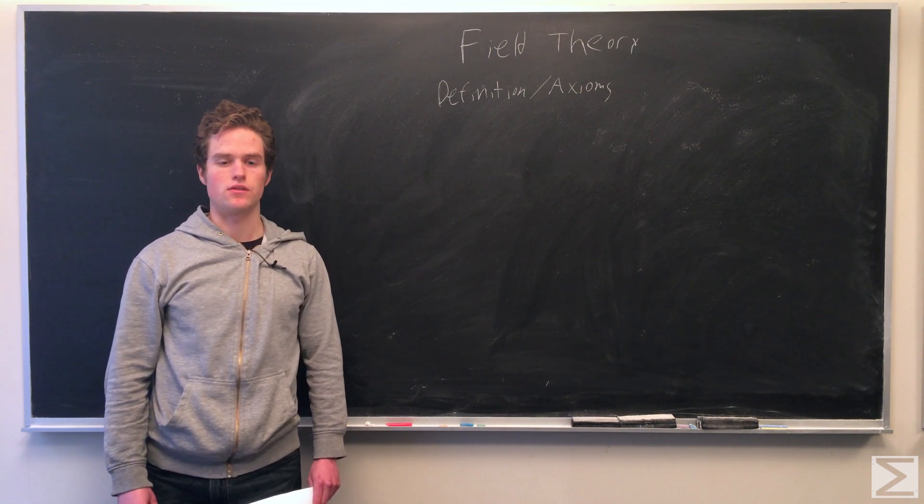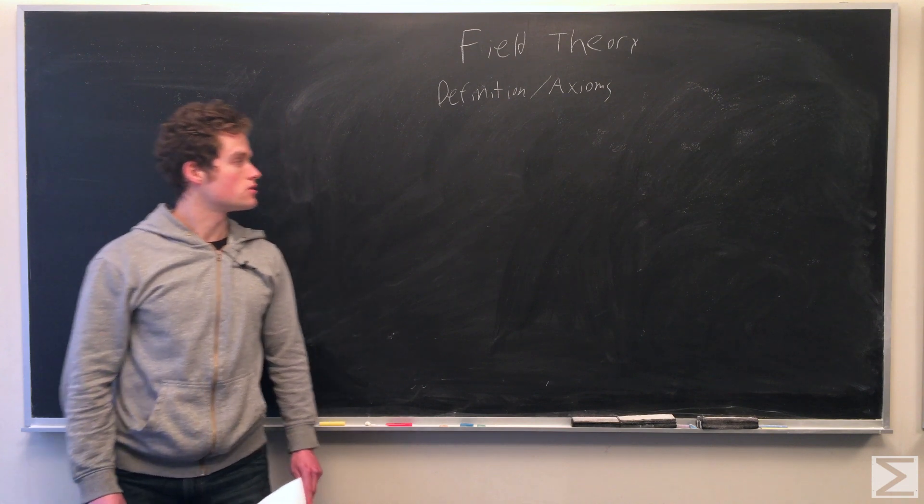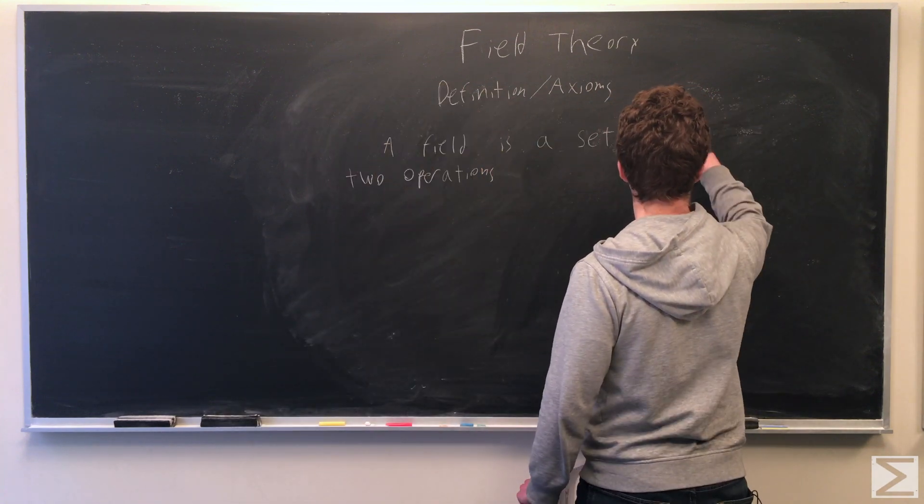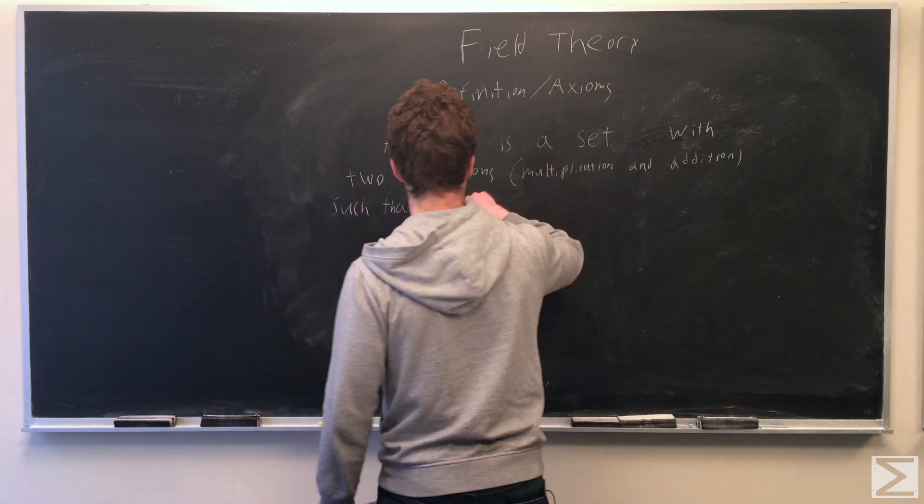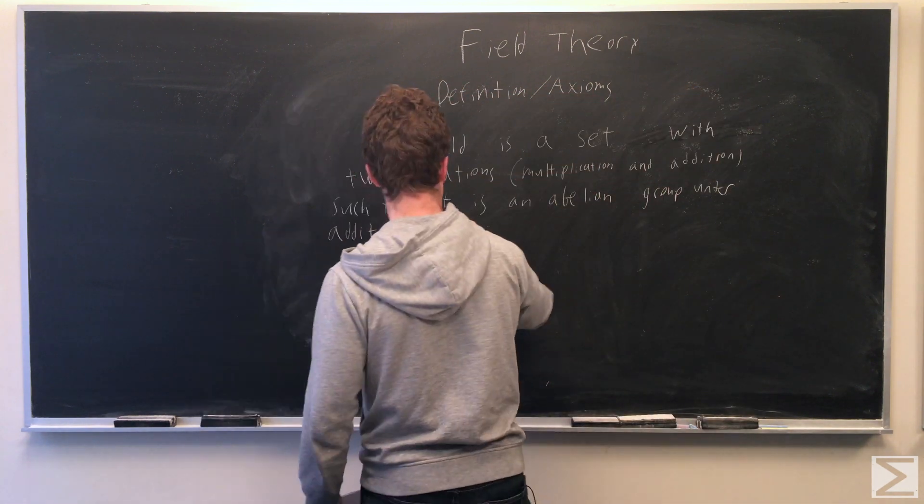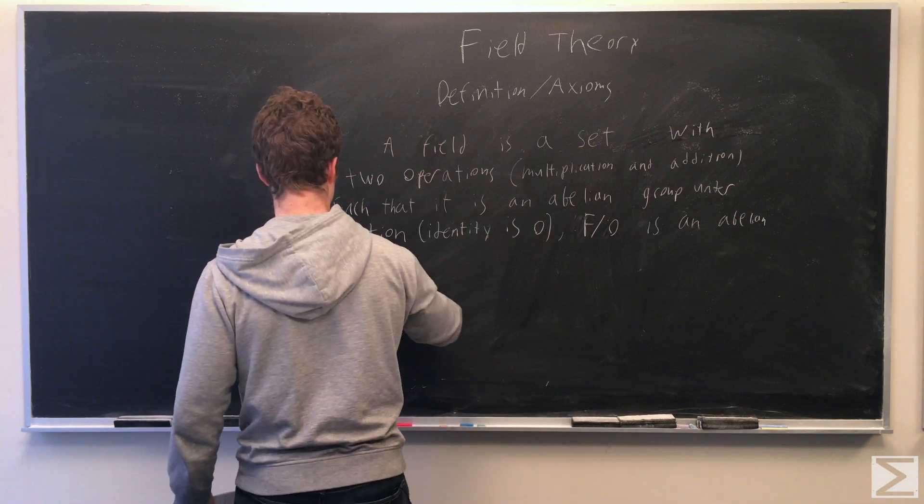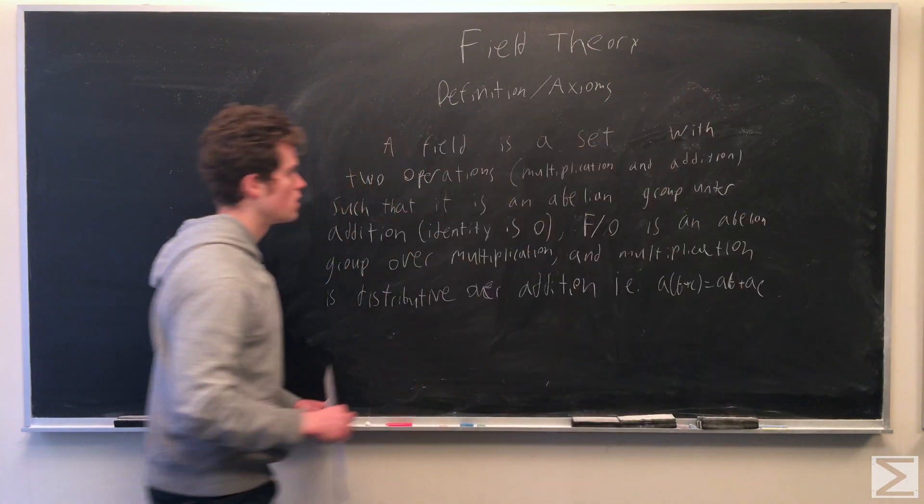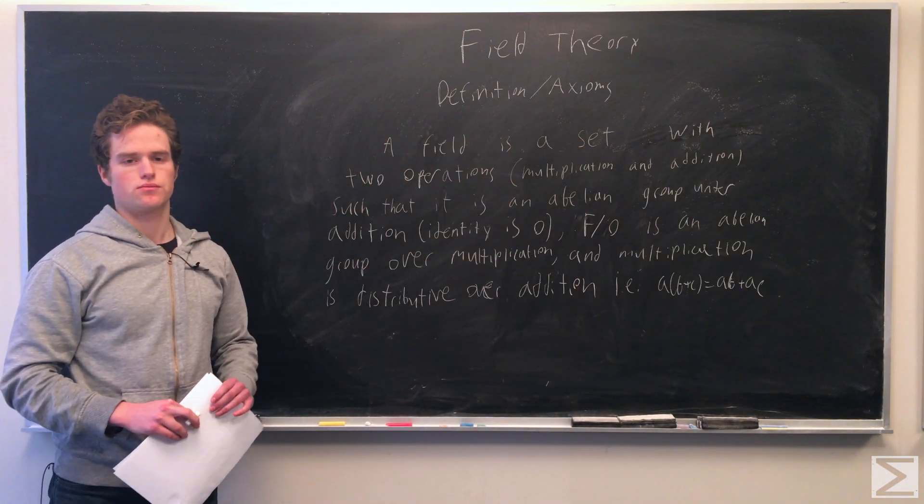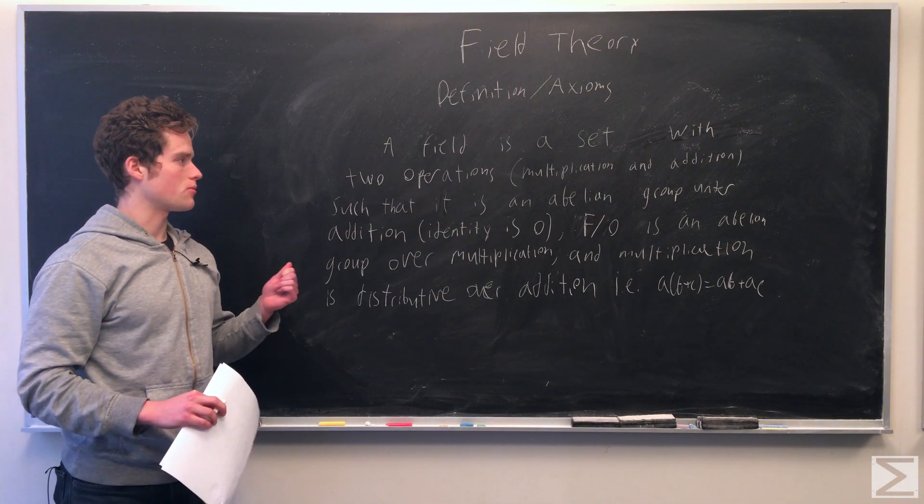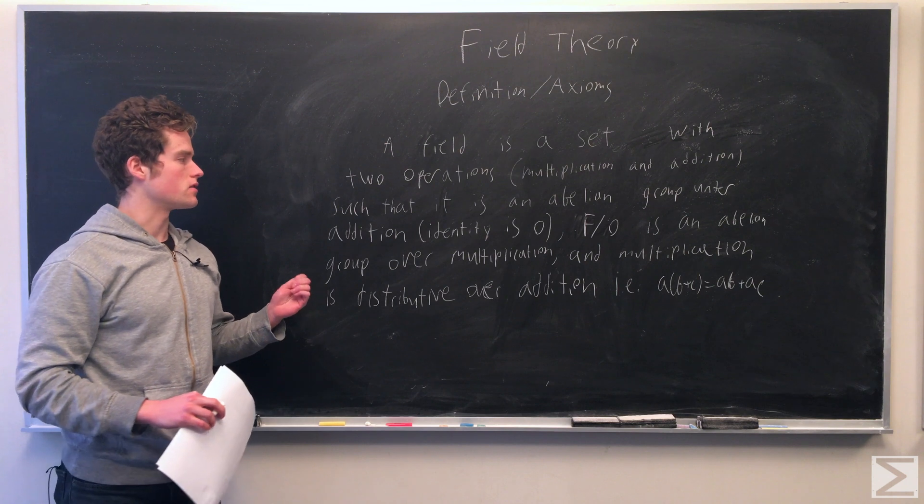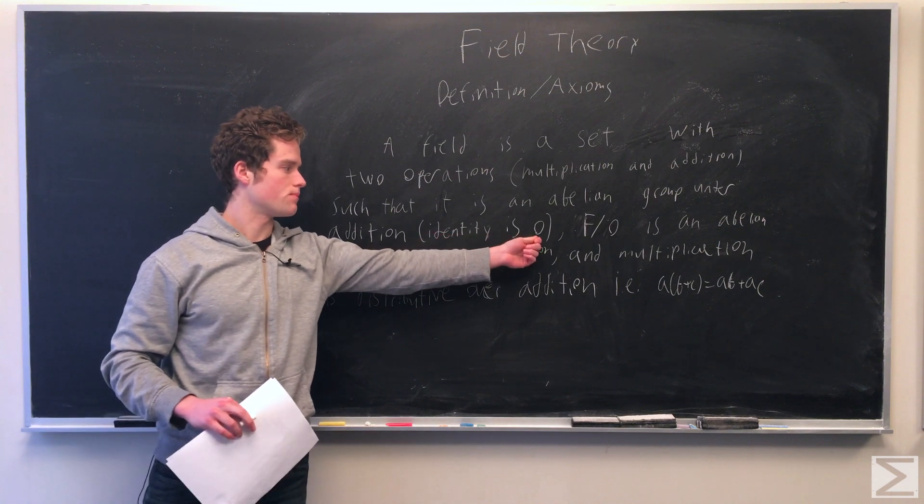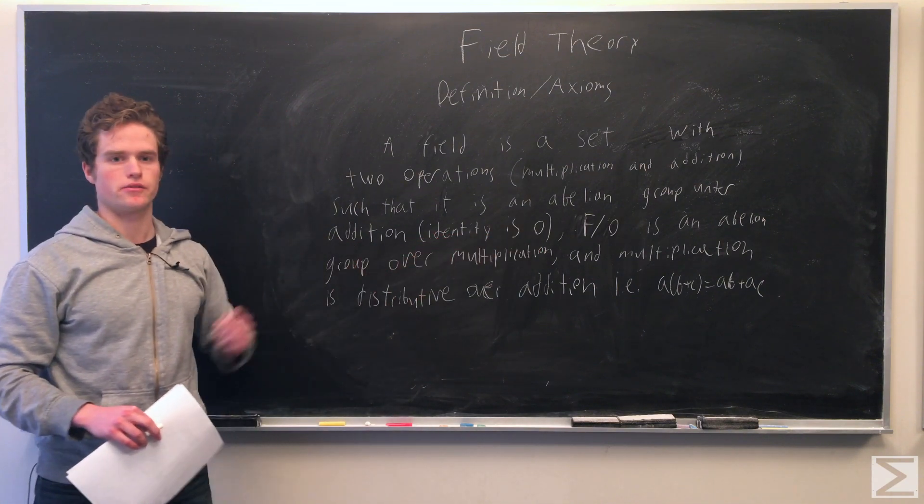Today we're going to talk about definitions and the axioms of fields. A field is like a generalization of rational numbers or real numbers. It's a set with two operations usually called multiplication and addition. It's an abelian group under addition and the identity element for addition is called zero, like in rational numbers.